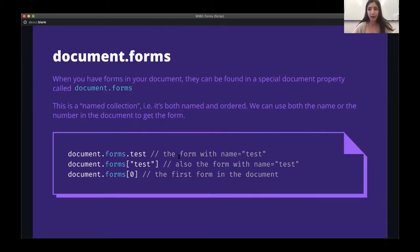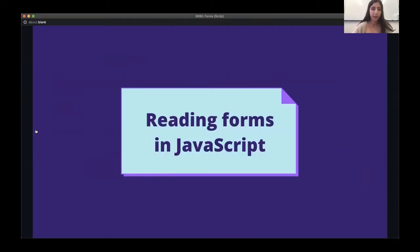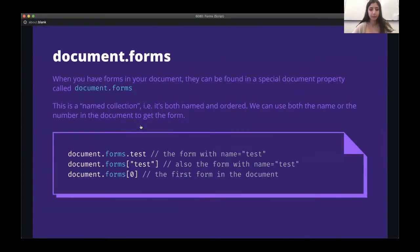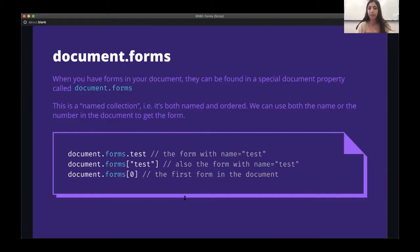document.forms with square brackets and the string 'test' also works to get the form with name test. Looking back at my example form, I've provided the form name 'userform', so I'd be able to access it using document.forms.userform. I can also just use a numeric index — document.forms[0] gets the first form in the document. What we get from document.forms is an HTML collection, kind of like an array of HTML form element objects.